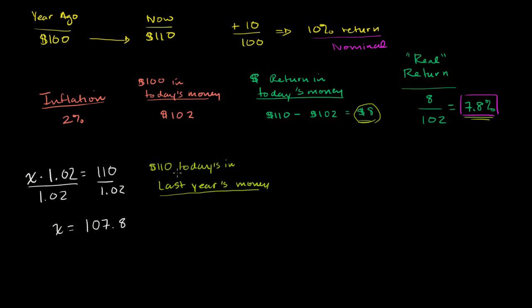So $110 today buys us the exact same thing, if you believe the whole CPI index, as $107.80, and maybe I could even add another digit, $107.84, which $107.84 would have bought us last year.